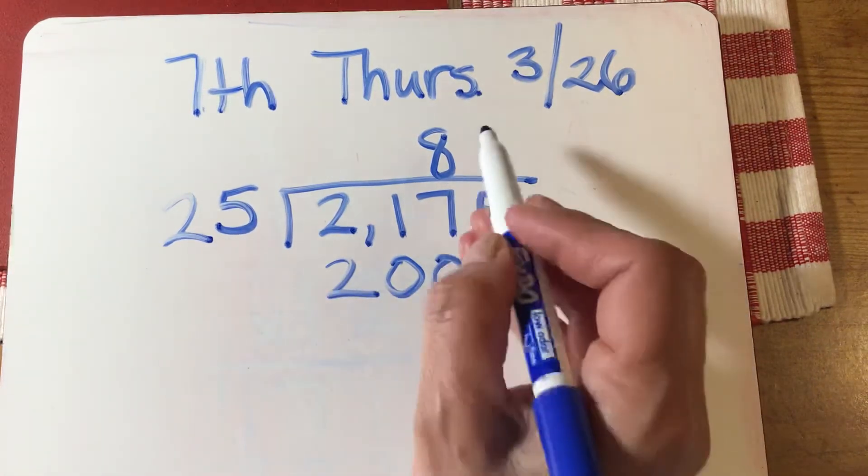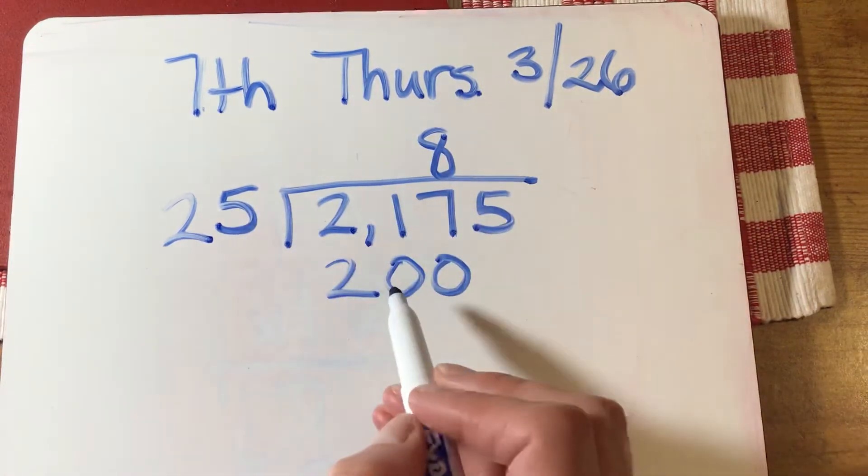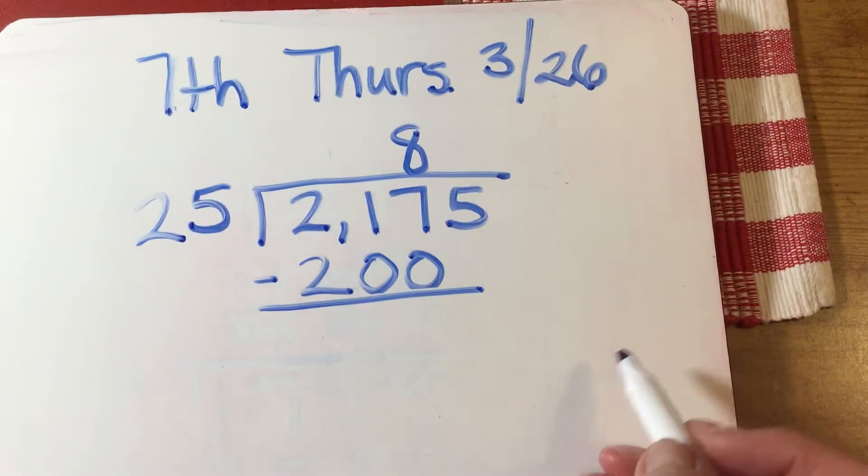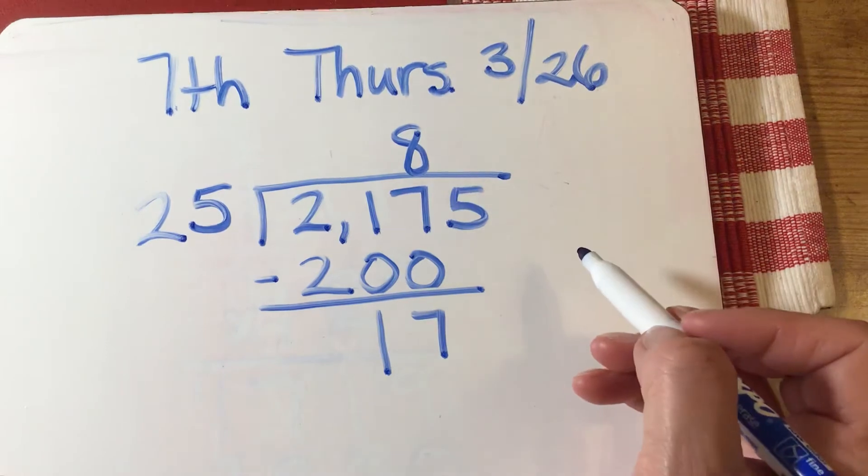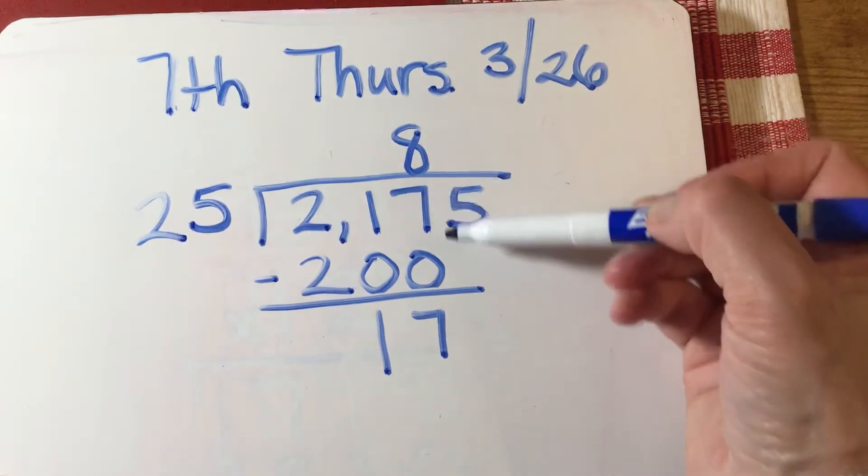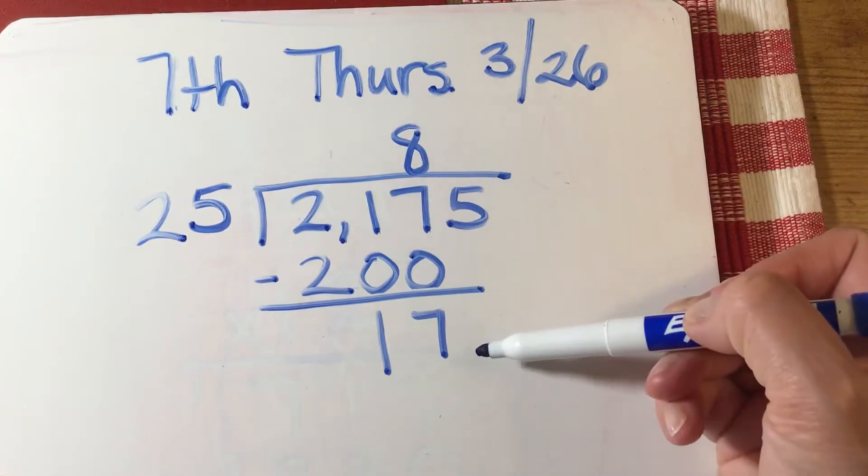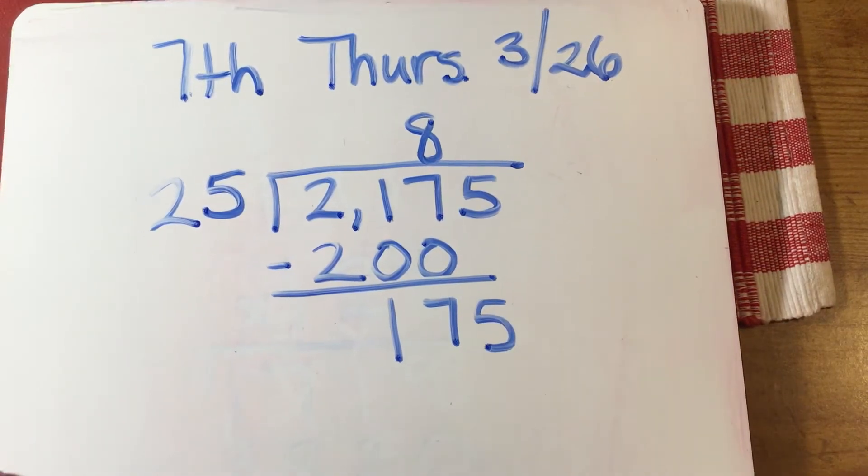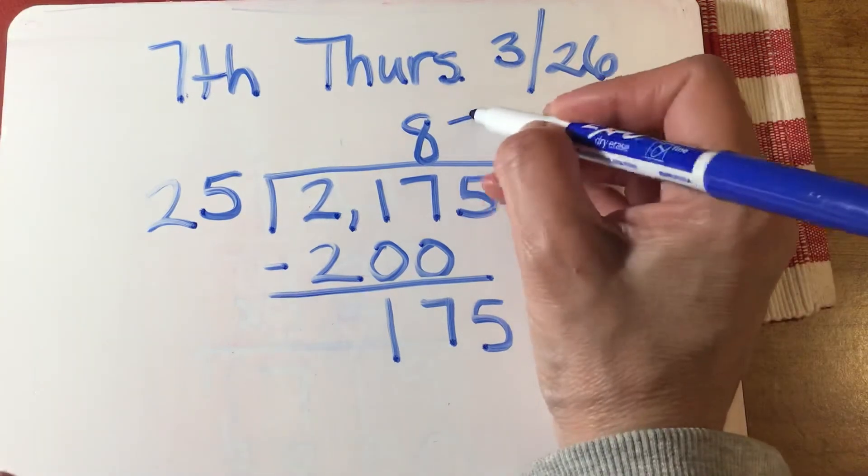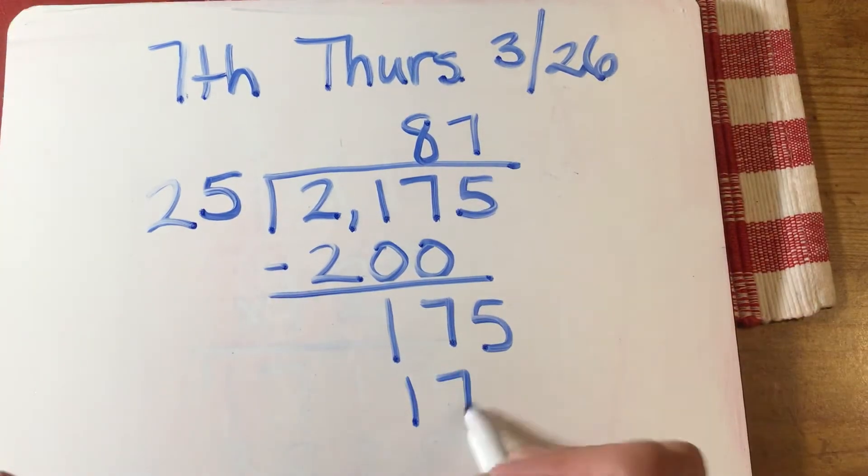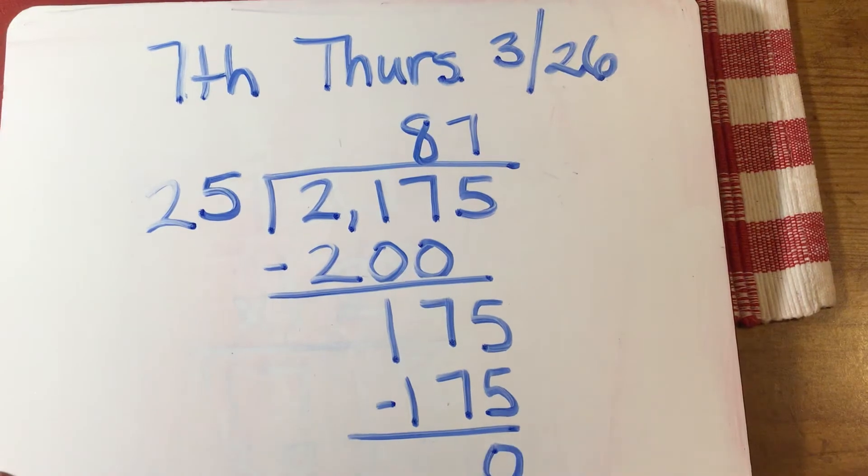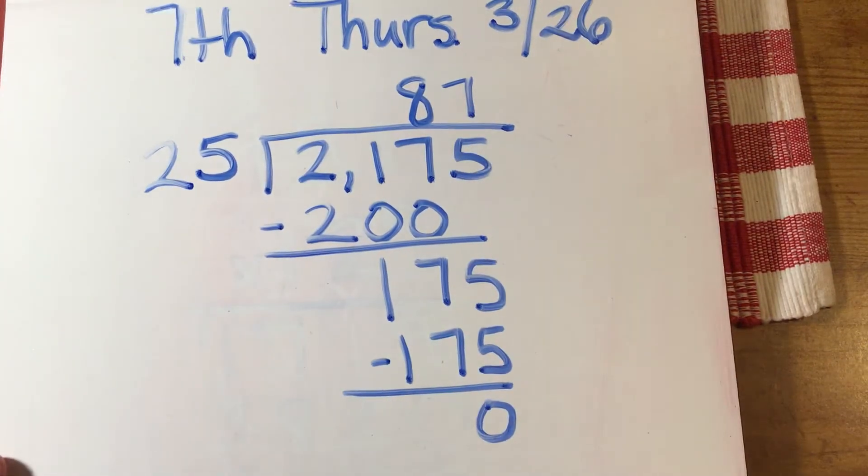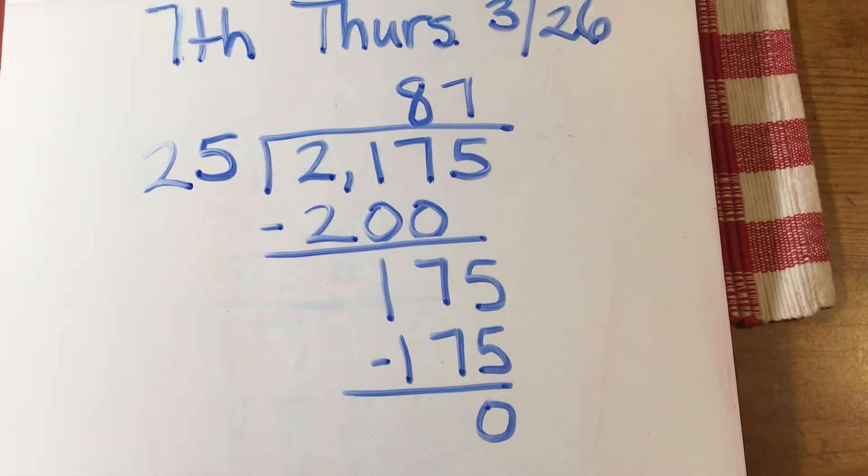Okay, so I did my division. I did my multiplication: 8 times 25 is 200. My next step is subtraction. Give yourself plenty of room to work and make sure you keep your numbers nice and straight. 217 minus 200 is 17. Bring down is my next step: 175. 25 times 7 equals 175, so you're not going to have a remainder. So your answer, or your quotient, is 87. Okay, so real quick video today.